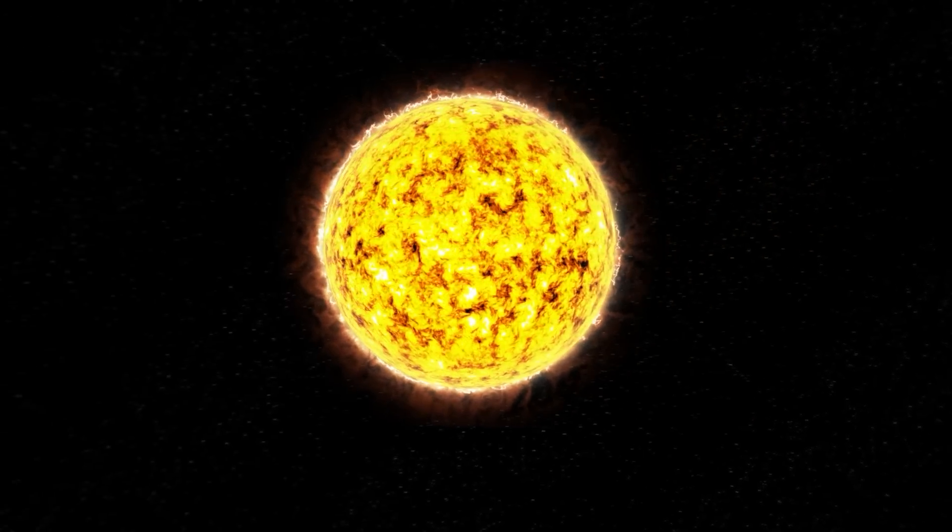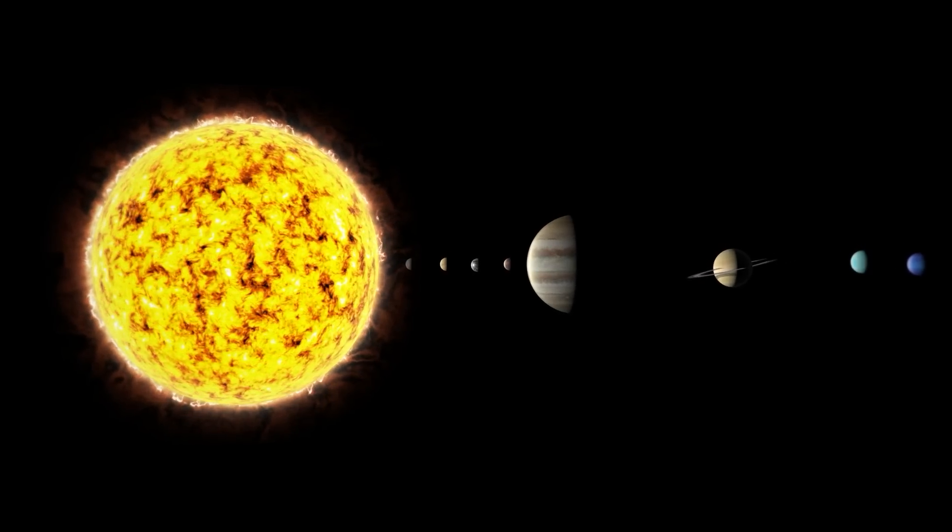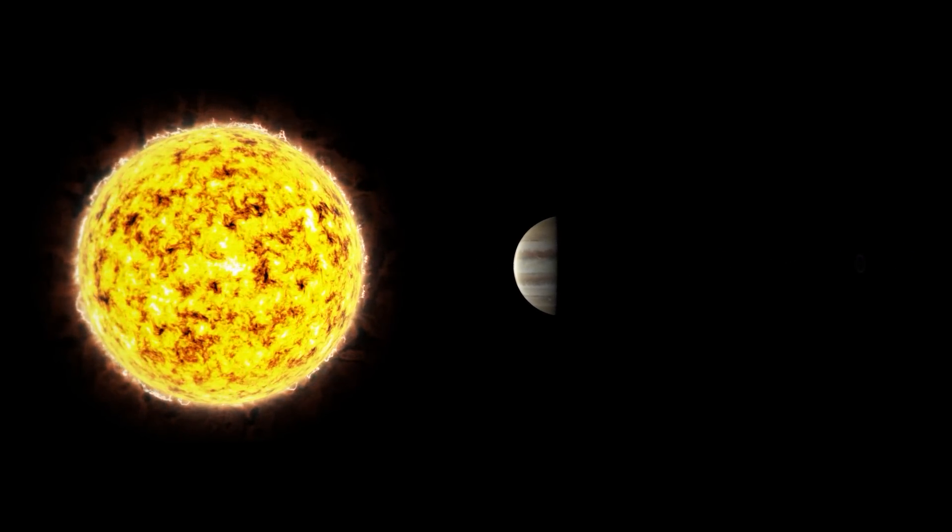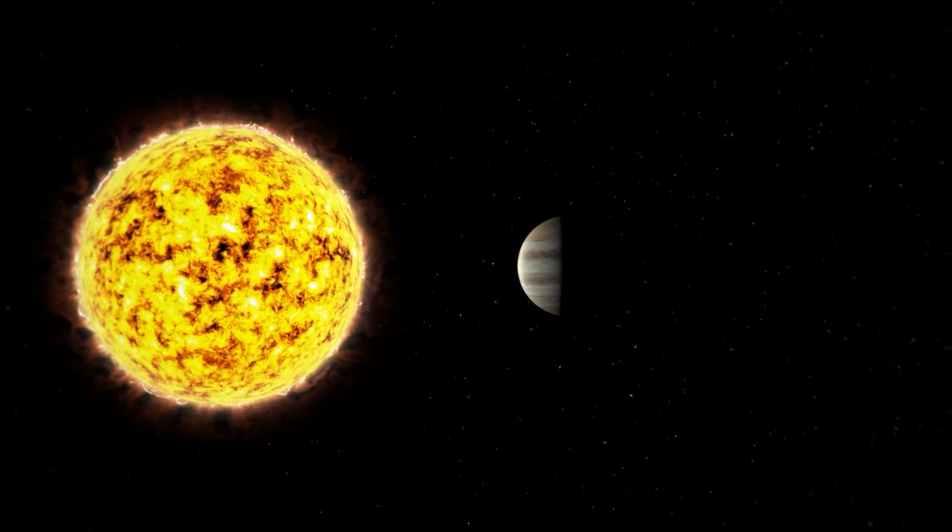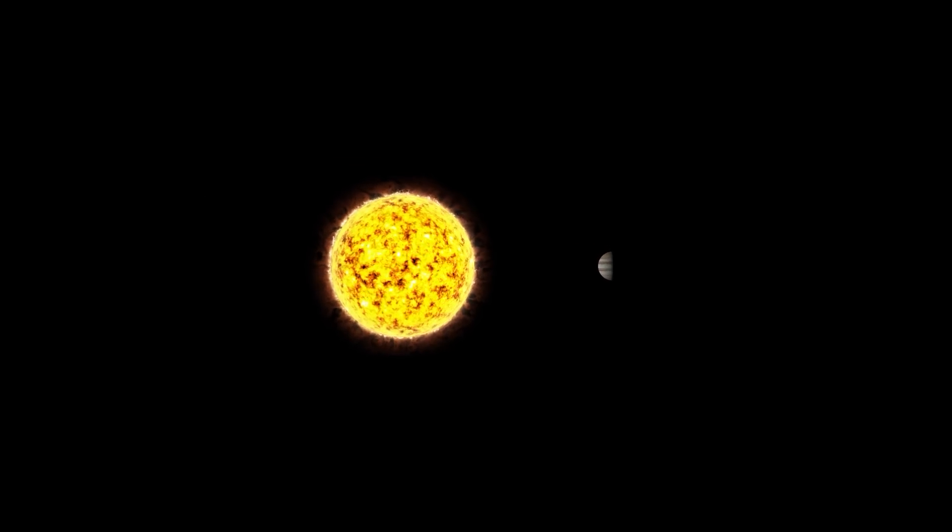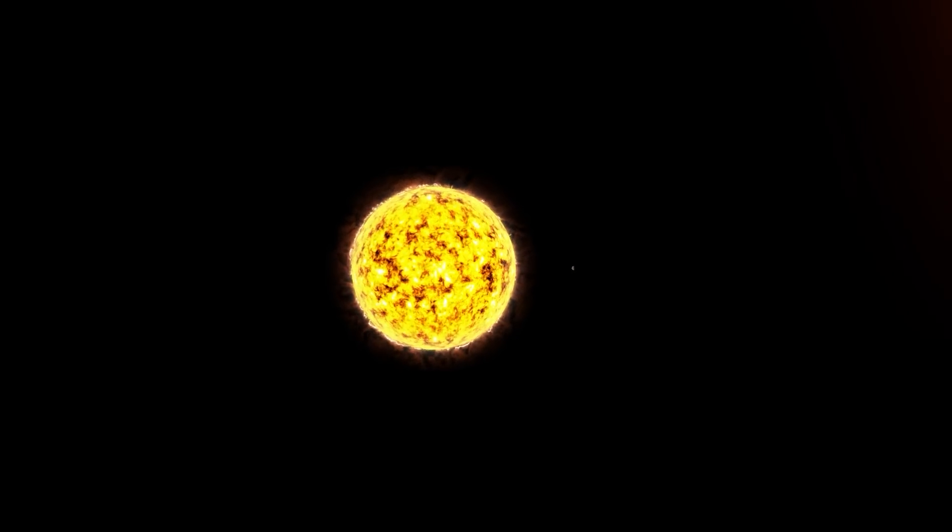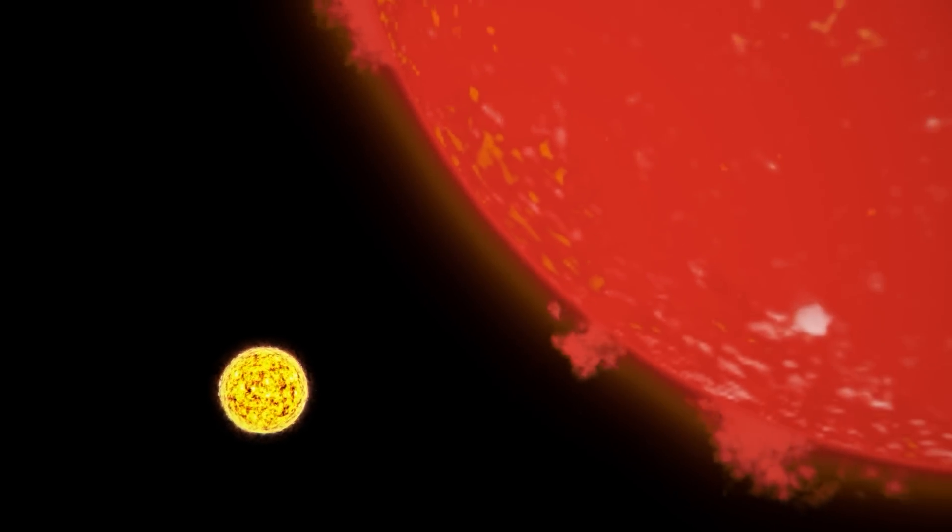We've all seen the solar system pictures in textbooks, the Sun slightly larger than Jupiter, but that isn't the right depiction of the scales. The Sun is so massive that you could fit about 1,000 Jupiters inside. Impressive as it is, our Sun isn't the biggest star in the universe or even our galaxy.